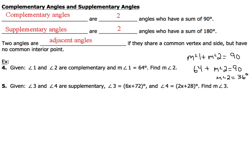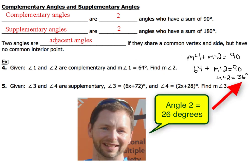Then we'll use our subtraction property of equality to determine the value of the measure of angle 2 to be 36 degrees.